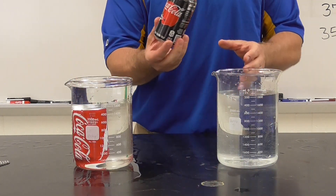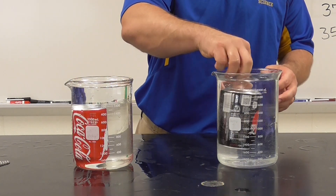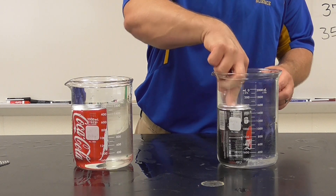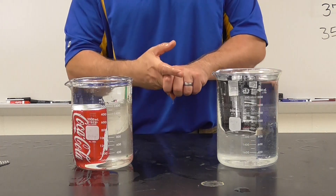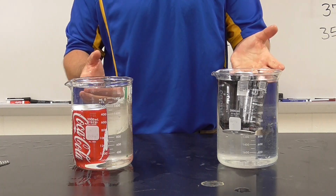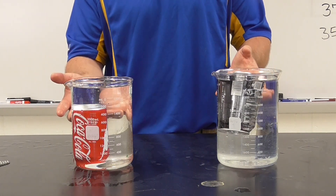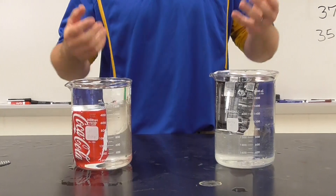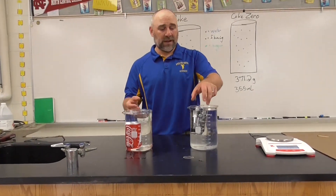Now I'm going to try the same with this Coke Zero. And you can see, interestingly, that the Coke Zero floats while the Coca-Cola sinks. So the question is, why? Why does this happen?